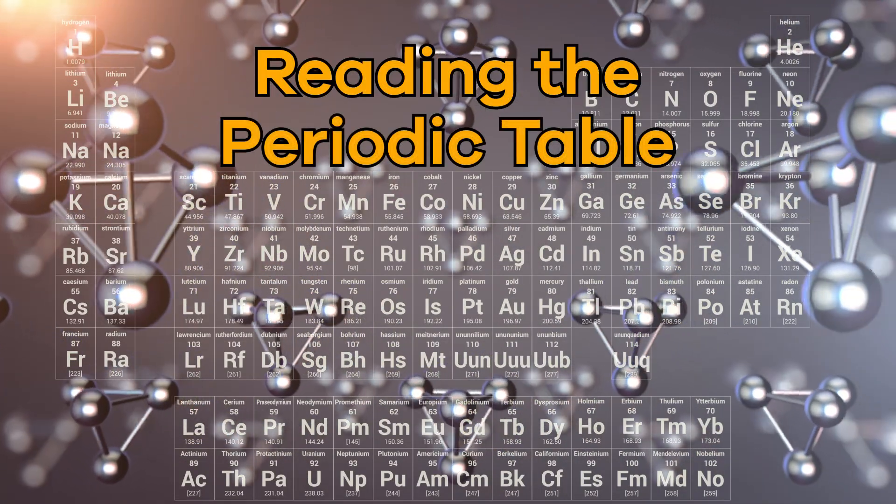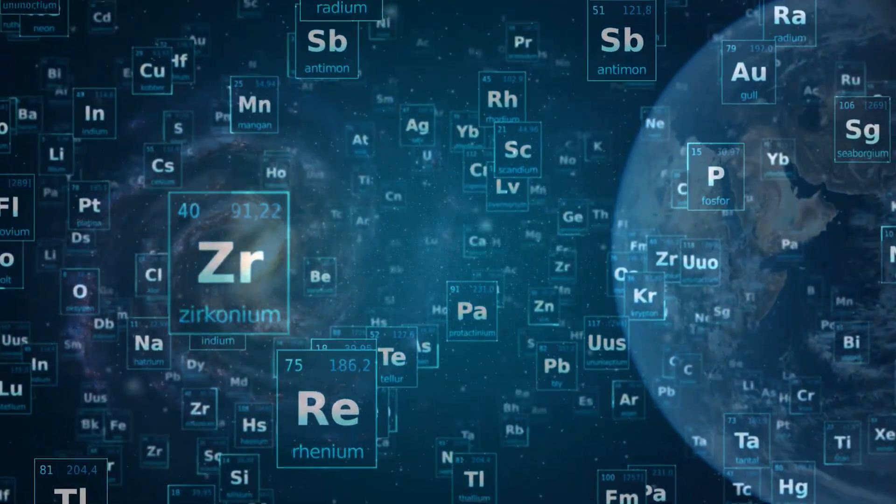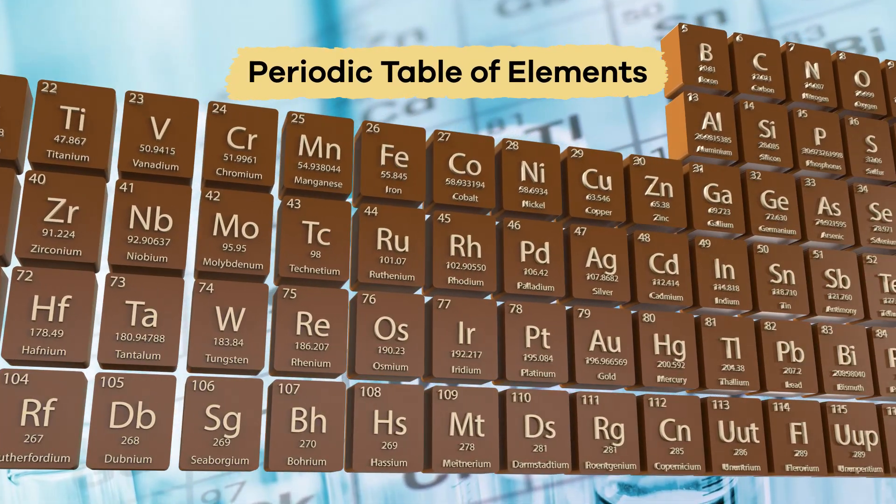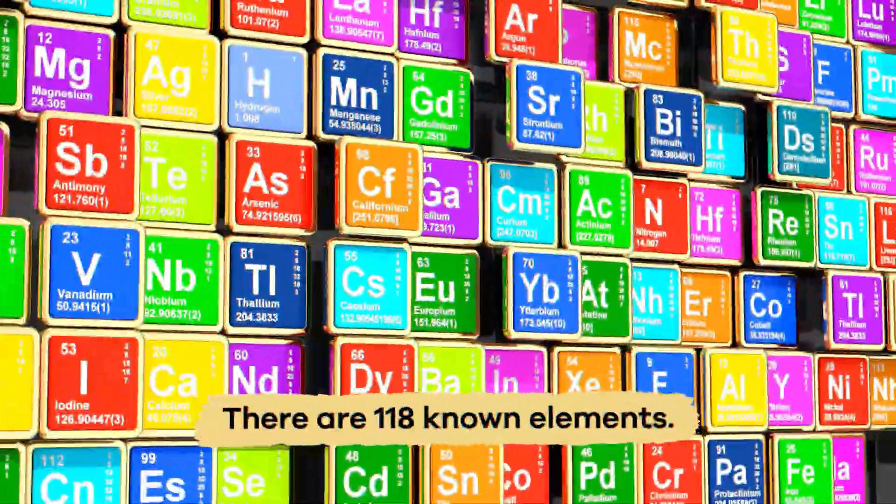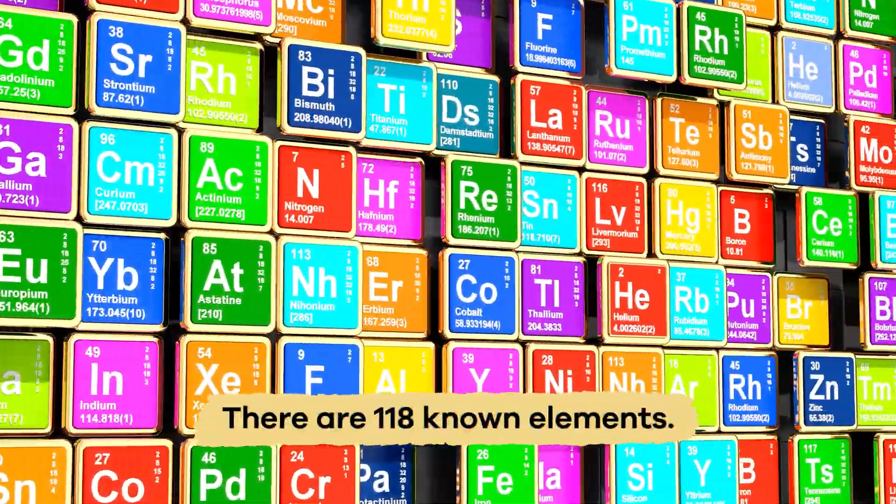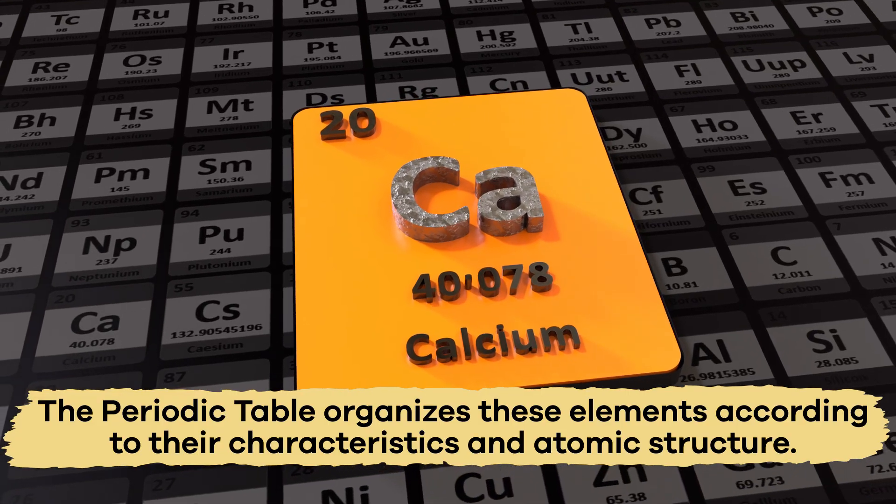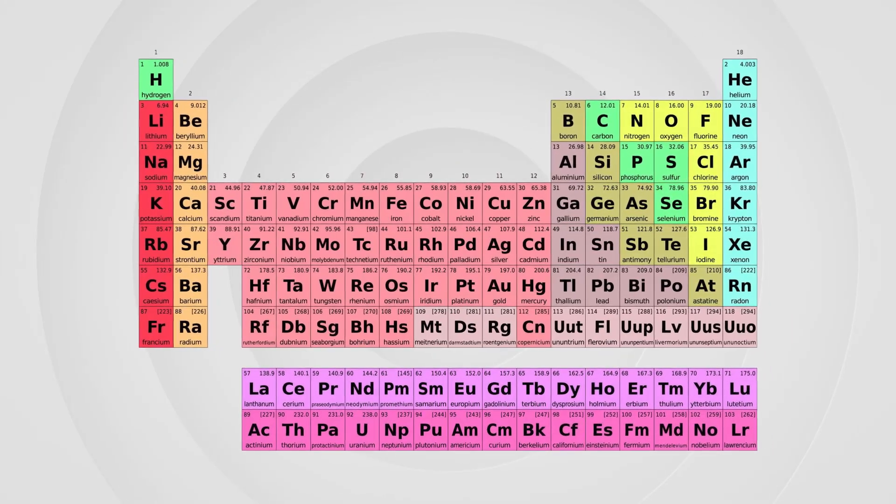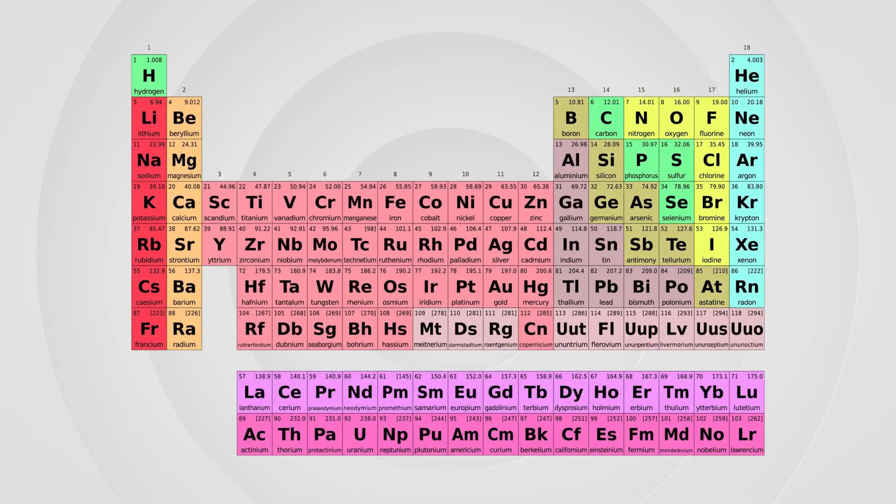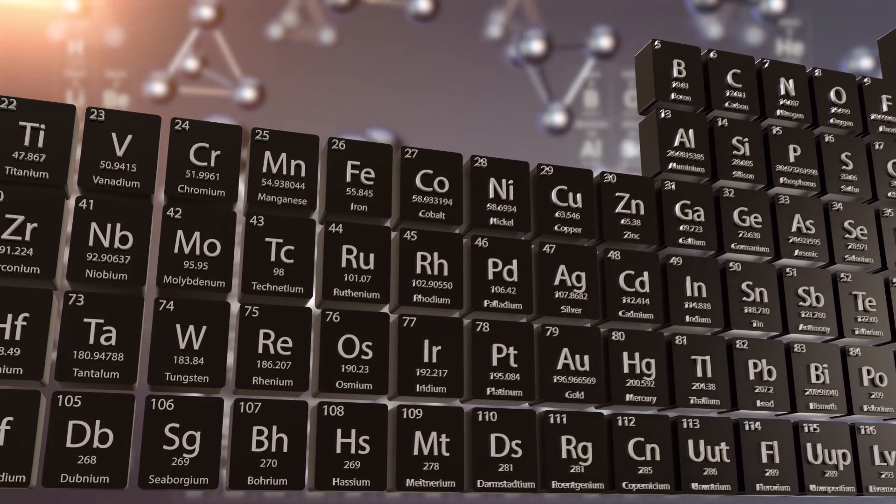Reading the periodic table. All of the known elements in the universe are organized into a chart called the periodic table of elements. Today we are going to learn how to properly read it. There are 118 known elements. The periodic table organizes these elements according to their characteristics and atomic structure. The chart has several parts that you can easily identify, which we will discuss in a minute.